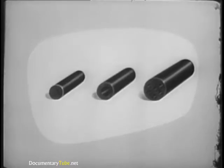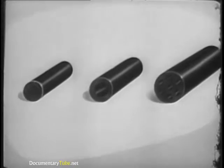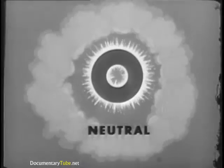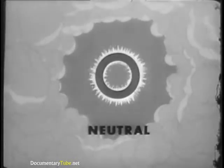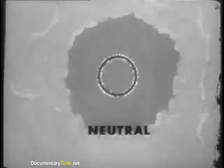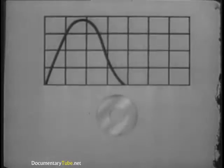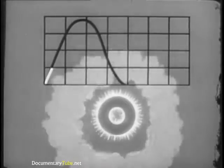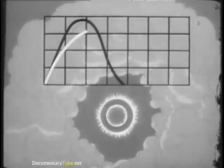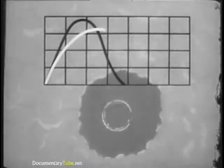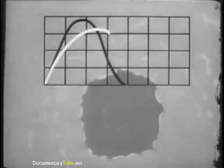The medium-sized grain with a single hole is called a neutral grain. In this form of grain, the burning is slower at first, but the burning surface remains constant during the burning period. Thus, the maximum pressure is not as high as with the degressive type, nor does the pressure drop off as sharply when the projectile moves.